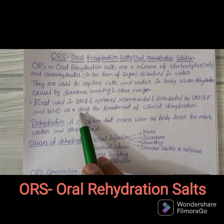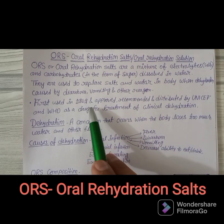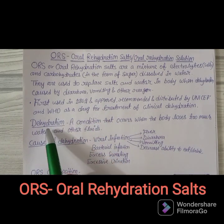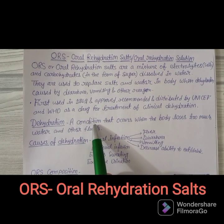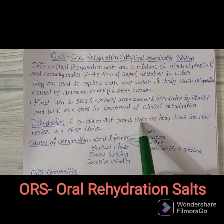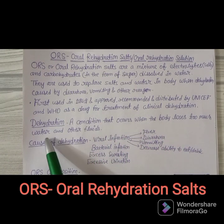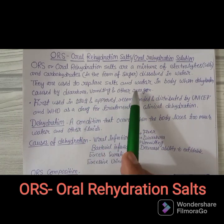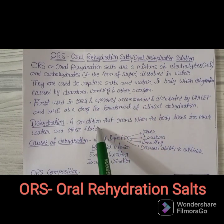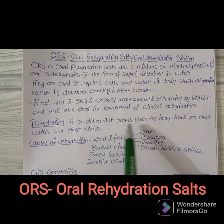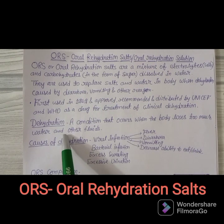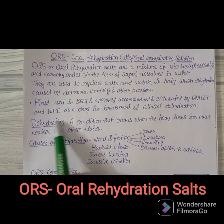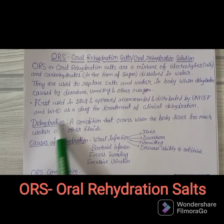Now, what is dehydration? Dehydration is a condition that occurs when the body loses too much water and other body fluids, due to different conditions like diarrhea, vomiting, illness, or prolonged medication. In that condition, the body loses a lot of water and fluid content — that is called dehydration.